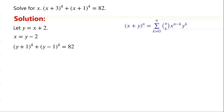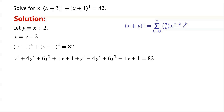Applying the Binomial Theorem: (Y plus 1) to the power of 4 equals Y⁴ plus 4Y³ plus 6Y² plus 4Y plus 1. And (Y minus 1) to the power of 4 equals Y⁴ minus 4Y³ plus 6Y² minus 4Y plus 1. The terms 4Y³ and negative 4Y³ cancel, and 4Y and negative 4Y cancel. So the equation becomes 2Y⁴ plus 12Y² minus 80 equals 0.